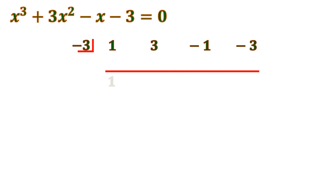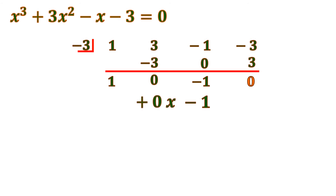Let's put the first value, which is 1. 1 times negative 3 is negative 3. 3 plus negative 3 is 0. 0 times negative 3 is 0. Negative 1 plus 0 is negative 1. Negative 1 times negative 3 is positive 3. Negative 3 plus 3 is 0 — so the remainder is 0. Converting the quotient to a polynomial: the coefficients give us 1x squared, 0x, and negative 1, so the quotient is x squared minus 1.